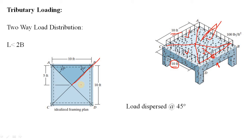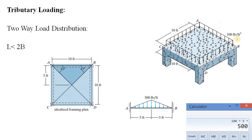Drawing the 45-degree lines divides the slab panel into four parts based on dimensions — the triangular areas vary accordingly. Each beam carries all the load in its particular region: the short beams carry triangular load areas, and the long beams carry trapezoidal load areas. For beam AB, the 45-degree line gives a middle ordinate of 5 feet. With an area load of 100 pounds per square foot, 5 × 100 = 500 pounds per foot is the maximum ordinate for beam AB.